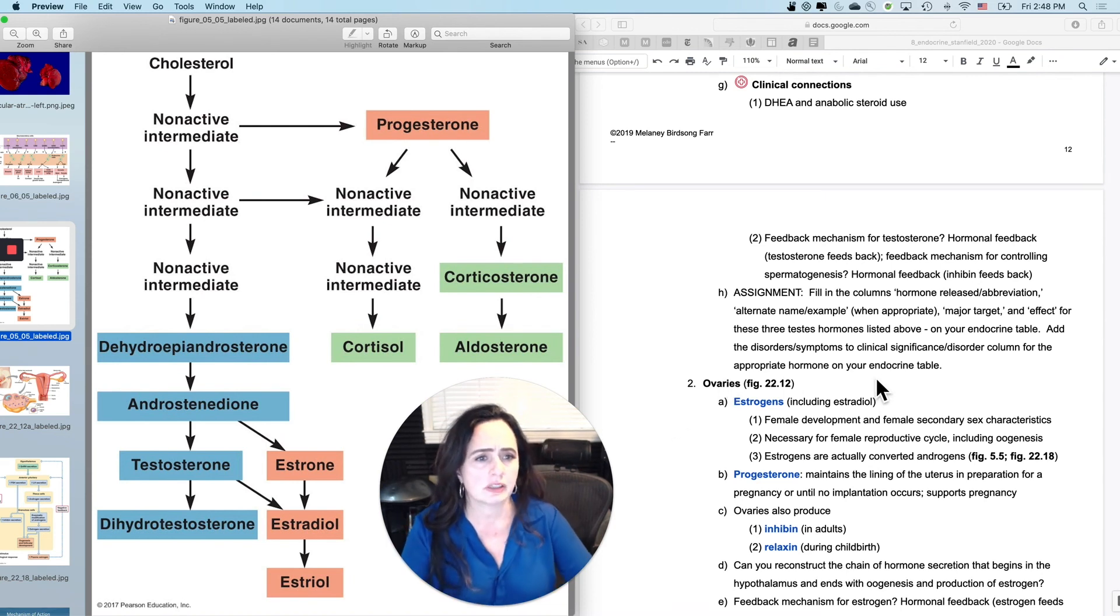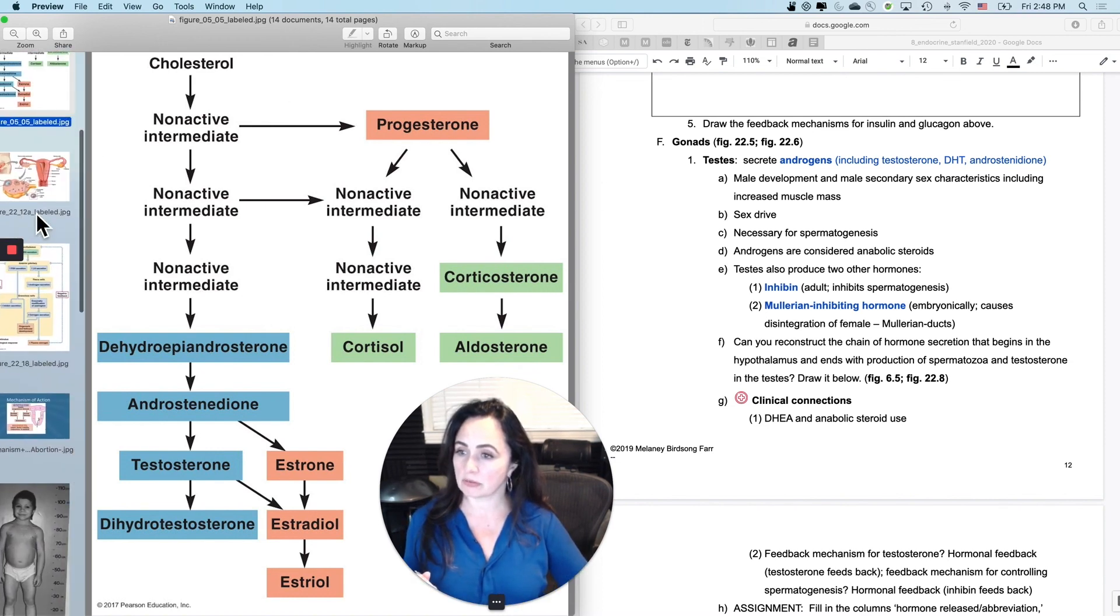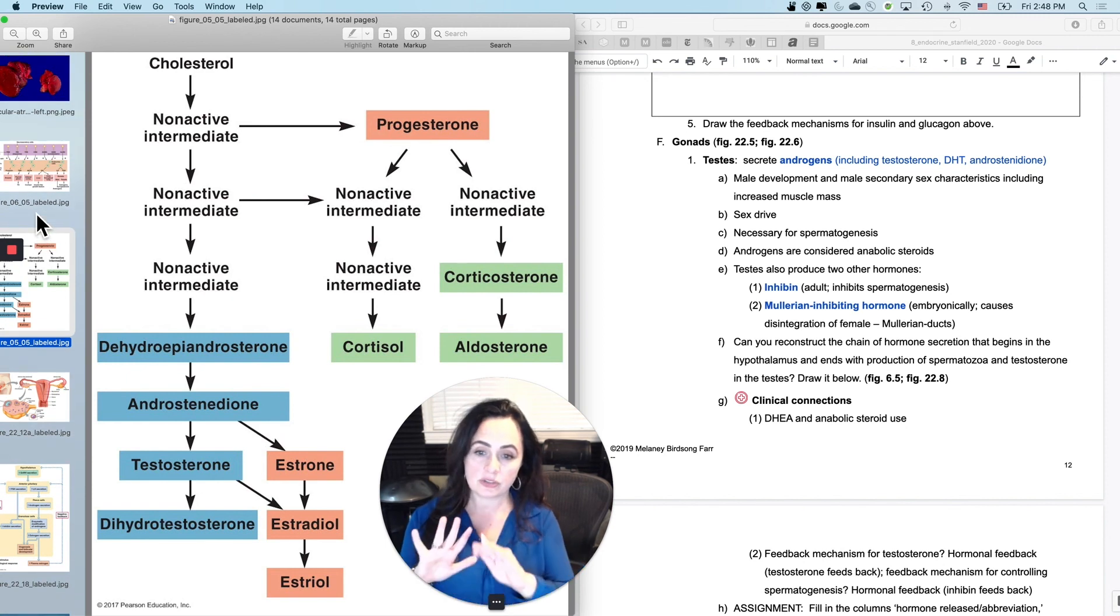Okay. So, and you should be able to fill in alternate names, examples, major target, bunch of targets, bone, muscle, a bunch of places, effect for these three testes hormones. And the third one is, androgens is the big class. You can put all of those together, make sure you know which ones are androgens. And then, inhibin is the one that we just talked about that is released during spermatogenesis. And then Mullerian inhibiting hormone is the one that was really only involved during the developmental phase to inhibit the female reproductive ducts from developing during embryonic and fetal development.